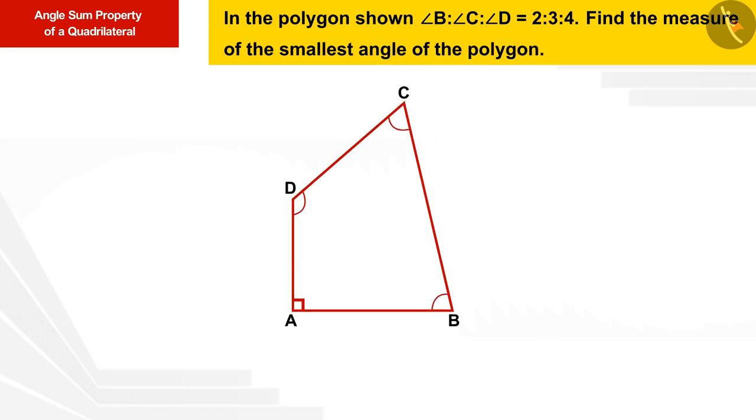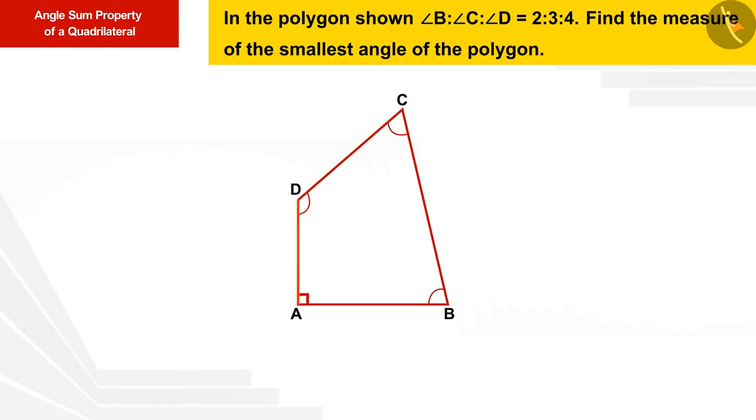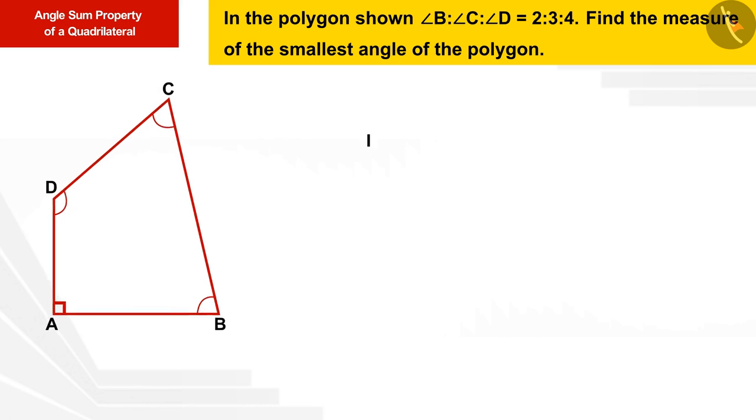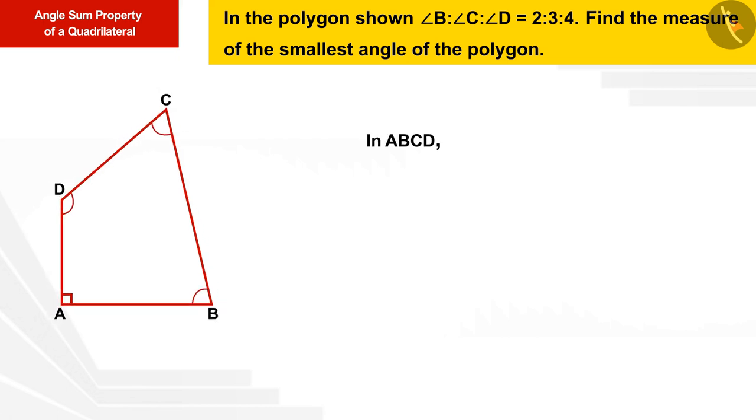Find the measure of the smallest angle of the polygon. We can see that this figure has four sides AB, BC, CD, and DA, so it is a quadrilateral. In the given figure ABCD, angle A is 90 degrees.